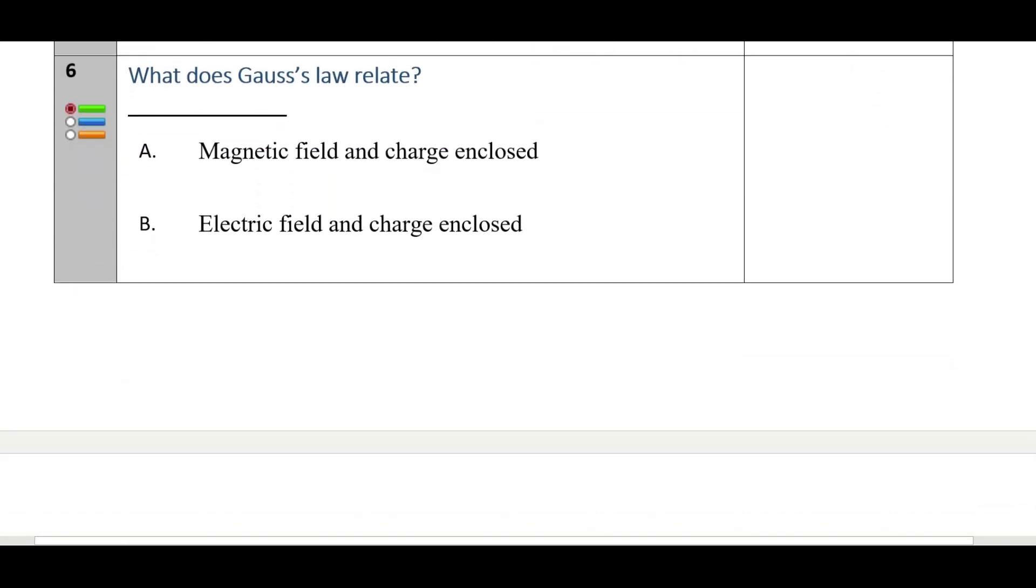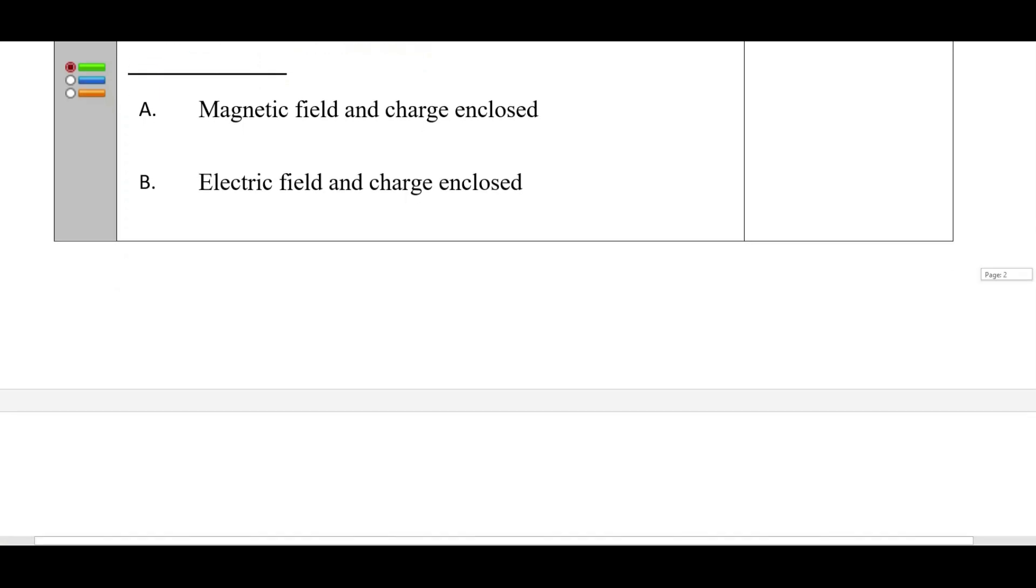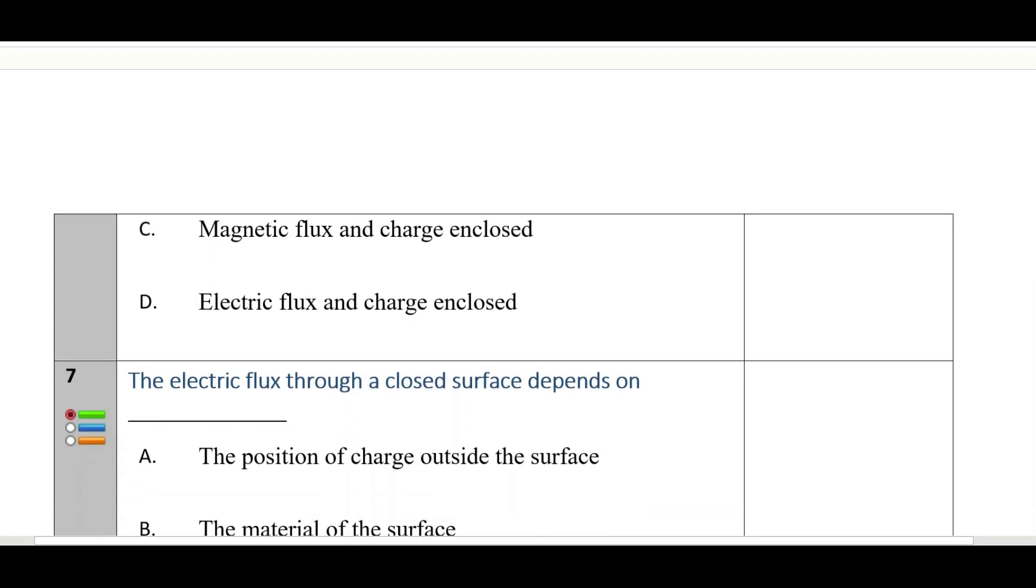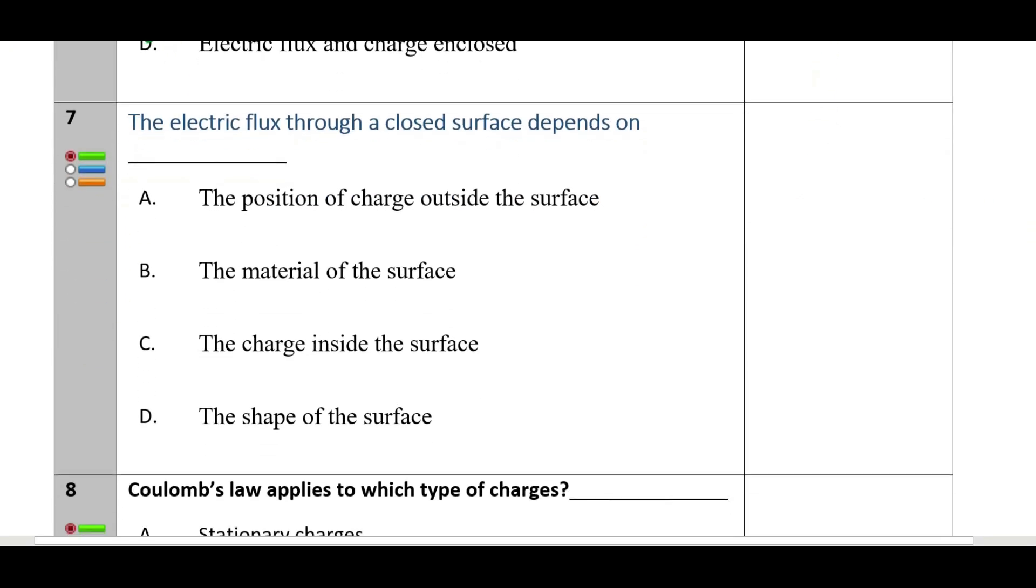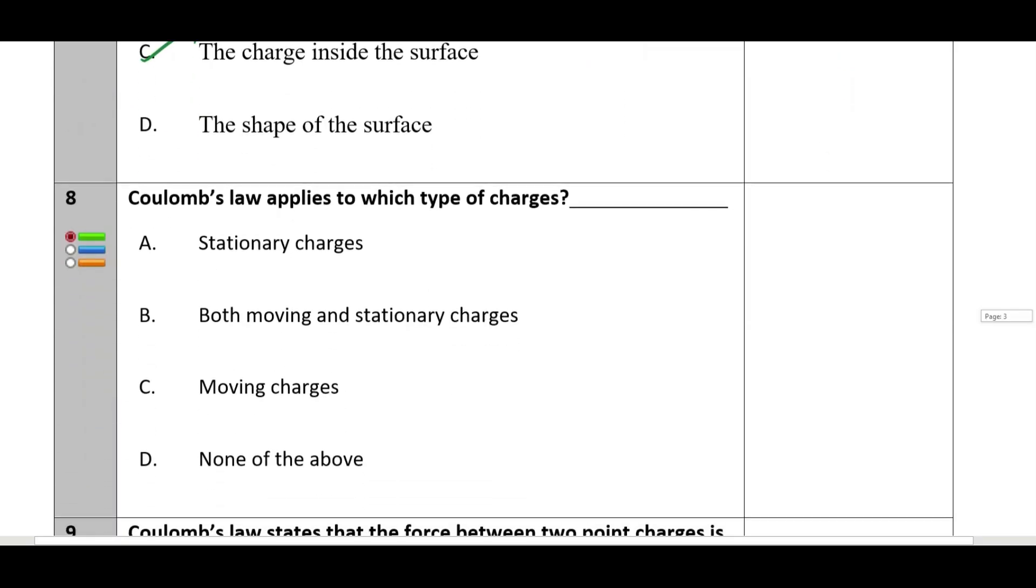Then sixth one: what does Gauss's law relate? The correct answer will be option D: electric flux and charge enclosed. Question number seven: the electric flux through a closed surface depends on the charge inside the surface. Coulomb's law applies to which type of charge? The answer will be stationary charge.